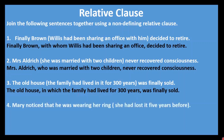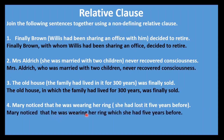Number four: Mary noticed that he was wearing her ring (she had lost it five years before). The bracket is at the end here, so you start from the beginning and go until you reach the bracket. The word just before the bracket is 'ring' — your subject. In the bracket, 'it' refers to ring — ring is an object, so the relative pronoun is which. Answer: Mary noticed that he was wearing her ring which she had lost five years before.